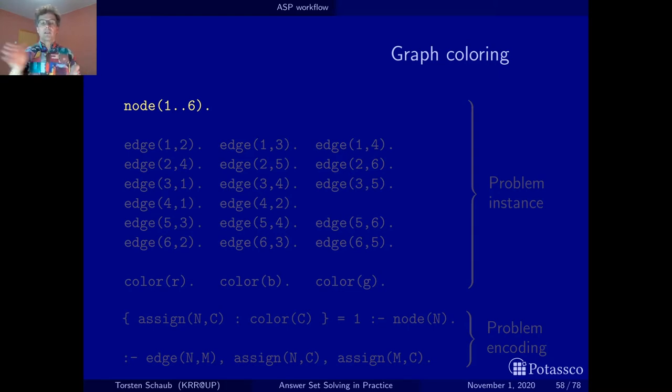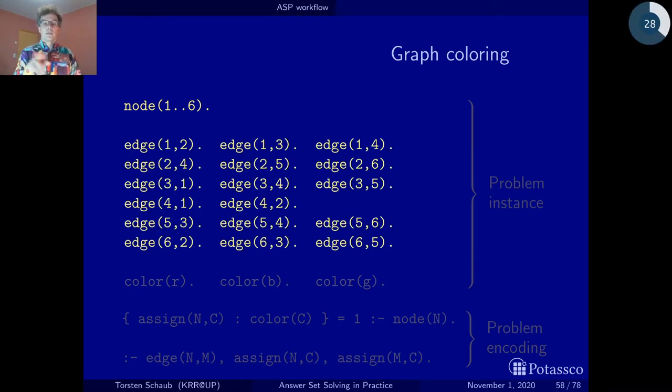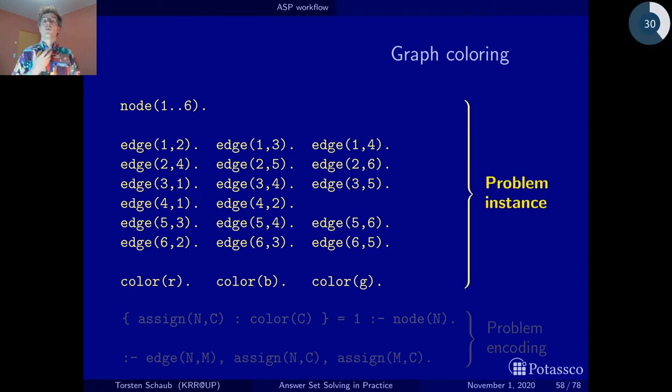Just because I'm lazy, I could have written all these things individually and keep in mind that every statement in a logic program must be terminated in real life by a dot. Then I've taken the graph that you've seen before and written down all the edges that it has. Keep in mind, for instance, 1 to 3 and 3 to 1, this is directional. These are arcs, so it's a directed graph, but it doesn't matter here that much. Then I've chosen three colors: red, blue and green. This now constitutes what I called before the problem instance.